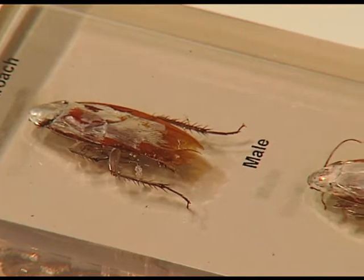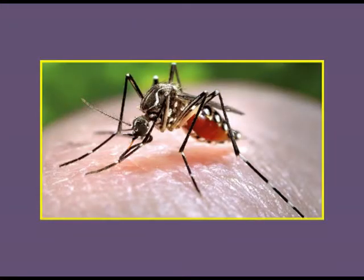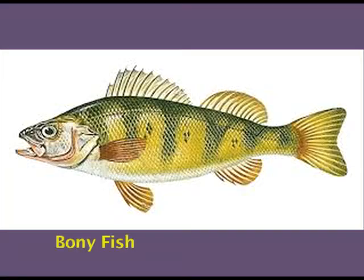Cockroach is oviparous, which means it is egg-laying. It is a nocturnal animal — active during the night. Other examples of phylum Arthropoda and class Insecta include honeybee and mosquito.